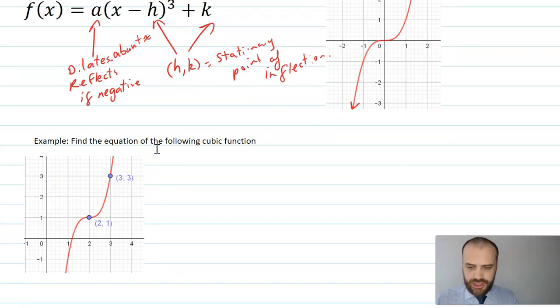Very quick example of this. If I see this cubic function here, I should know straight away that it's going to be a bracket x. The h value is, I've got my stationary point here, now I need to use the negative x value of that, so x minus 2 cubed plus k, now it's moved 1 up, so plus 1. So I know that so far, I don't know what the a value is, but I do know that it's passing through 0, 3, so I can sub 0, 3 into my equation.